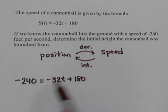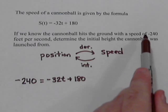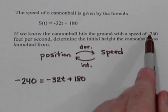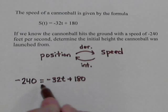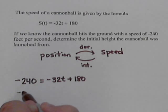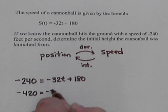We can solve this equation for the t, and that will tell us how long it took to hit the ground, because that's when the speed was 240. So subtract the 180 from both sides, so it gives me negative 420 equals negative 32t.